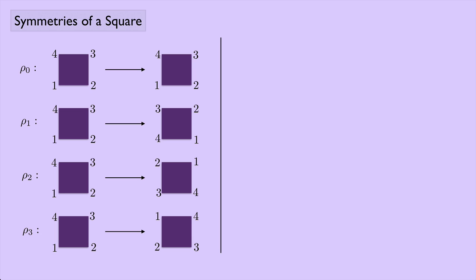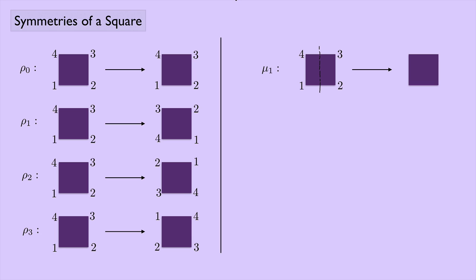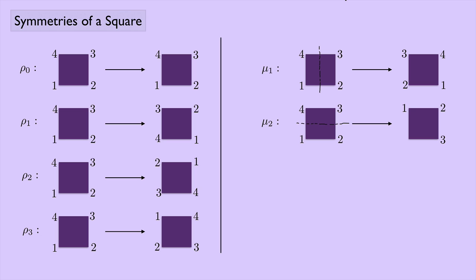That takes care of the rotations. For flipping about a perpendicular bisector, I'll call the first one μ₁. Flipping about the vertical bisector down the middle causes 1 and 2 to switch places and 3 and 4 to switch places. Then μ₂ is a flip about the horizontal bisector, causing 1 and 4 to switch places and 2 and 3 to switch places.